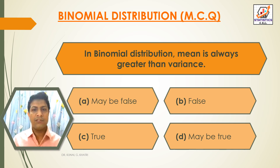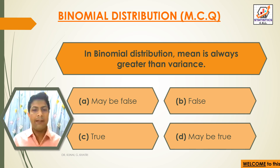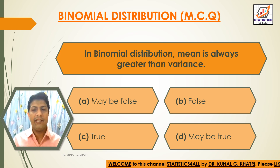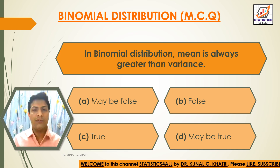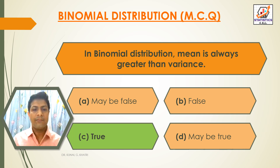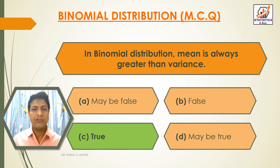Next question: In binomial distribution, mean is always greater than variance. Option A: May be false. Option B: False. Option C: True. Option D: May be true. The answer is option C — True. In binomial distribution, mean is always greater than variance.